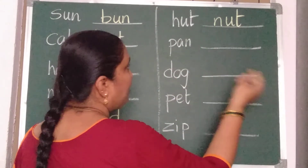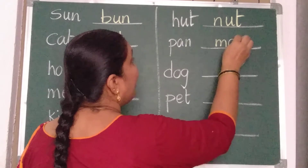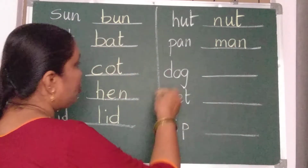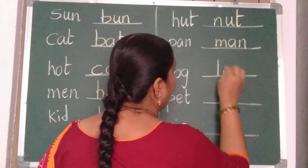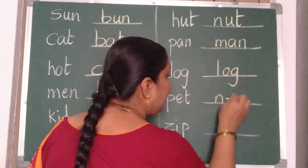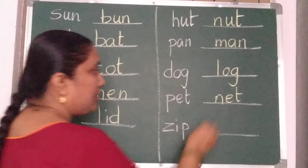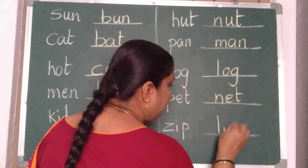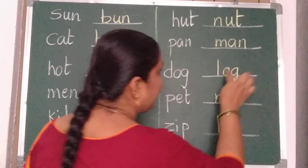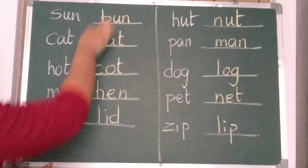Like that you should write rhyming words. Pan, man, van — van also you can write. Dog, log — L, O, G — log. Pet, net — N, E, T — net. Zip, lip — L, I, P — lip. See children, the last two letters are the same; only the first letter I have changed.